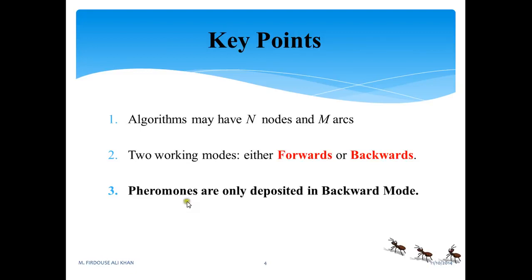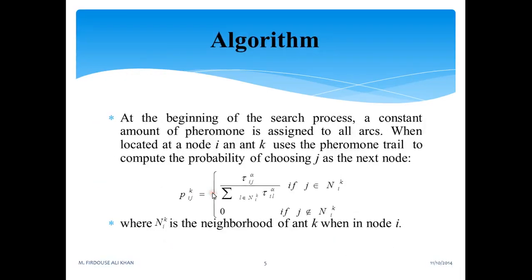Now the key points that can be observed in this ACO algorithm: it may have n nodes and arcs. Two working modes will be there, either forward or backward, but pheromone trails are only deposited in backward mode.